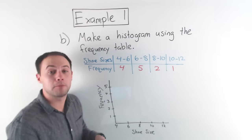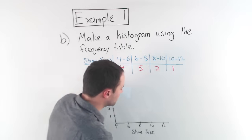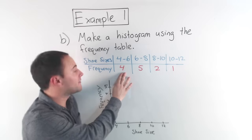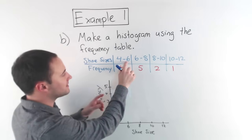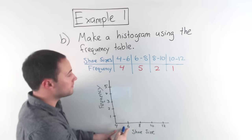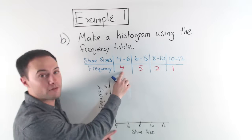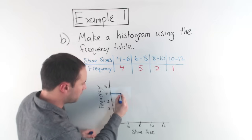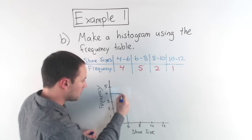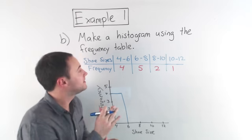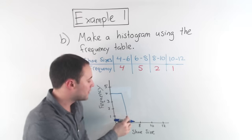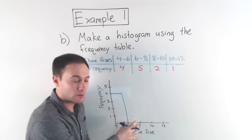Now I'm ready to draw my bars and the bars of my histogram, the height is whatever you had for the frequency, right? So from four to six, that interval, I had a frequency of four. So from here to here, all the way up to four, draw a bar. The difference with histograms and bar graphs, it looks very similar to a bar graph, but there should be no gaps.